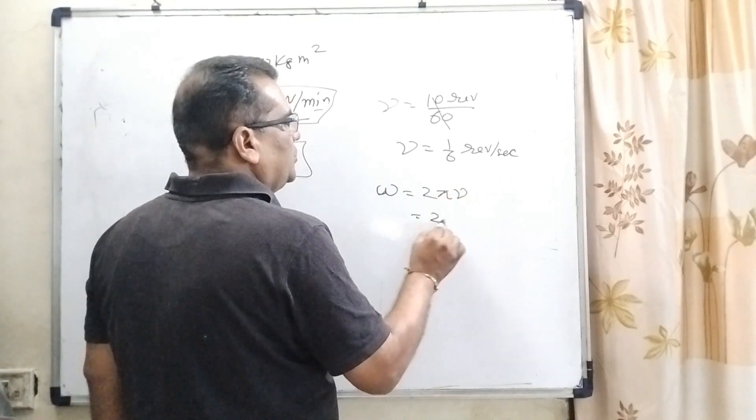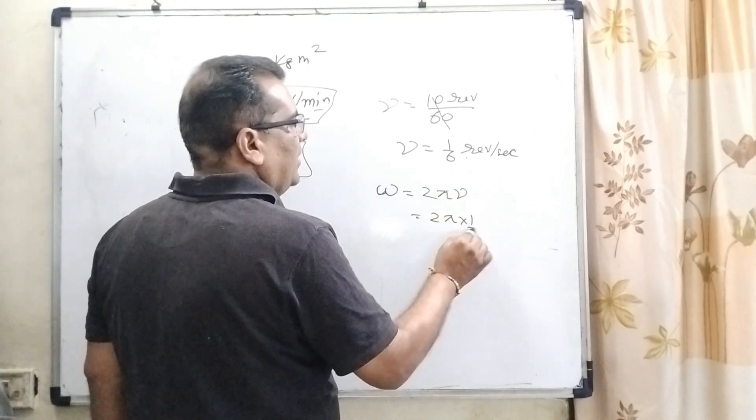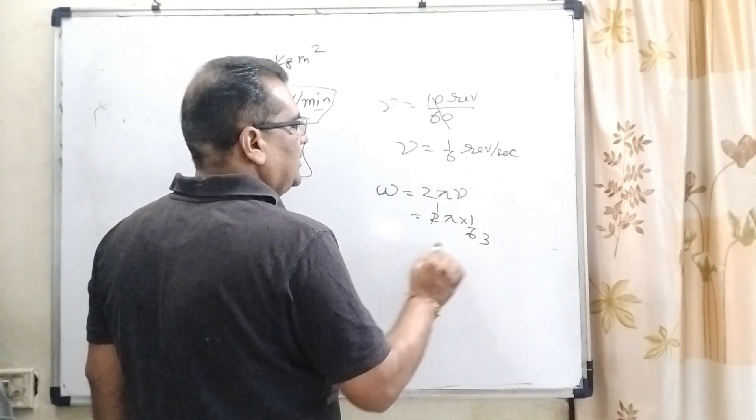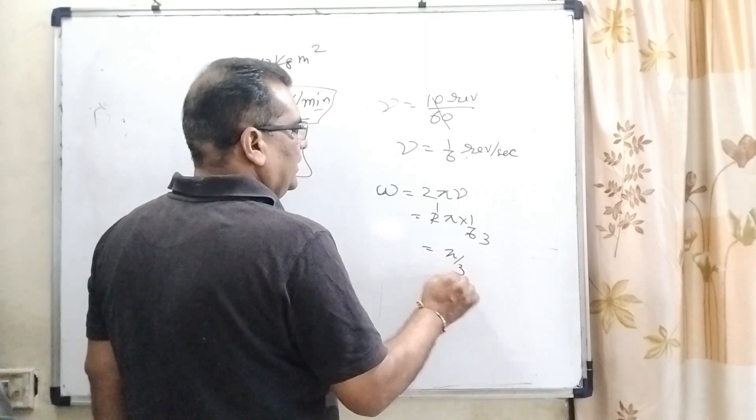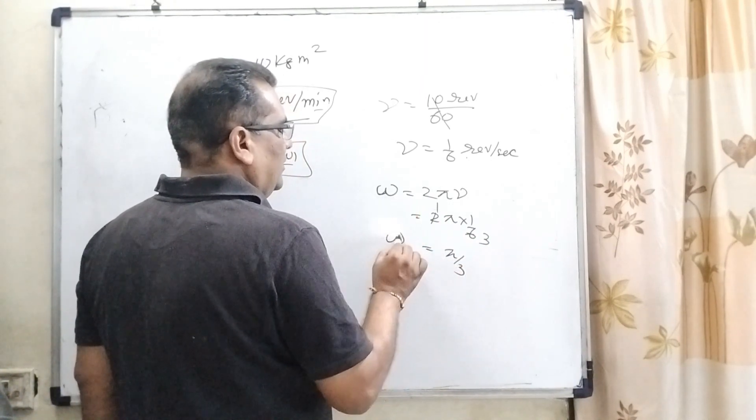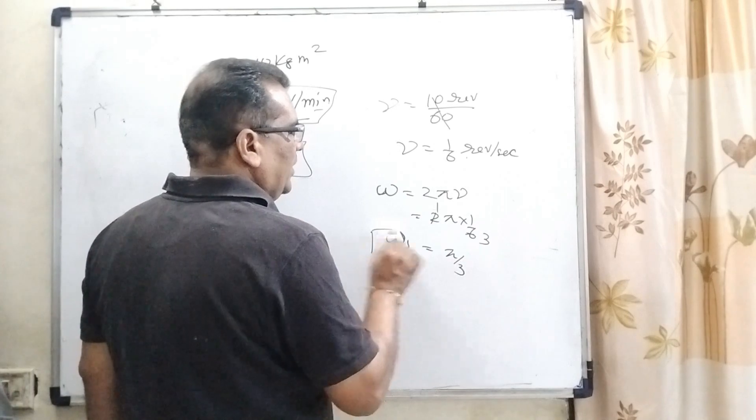what is the relation of angular velocity and this is frequency? We know that very well, omega equals 2 pi nu. So, 2 pi substitute this value 1 by 6, 2 into 1 is 2, 2 into 6, that is pi by 3.